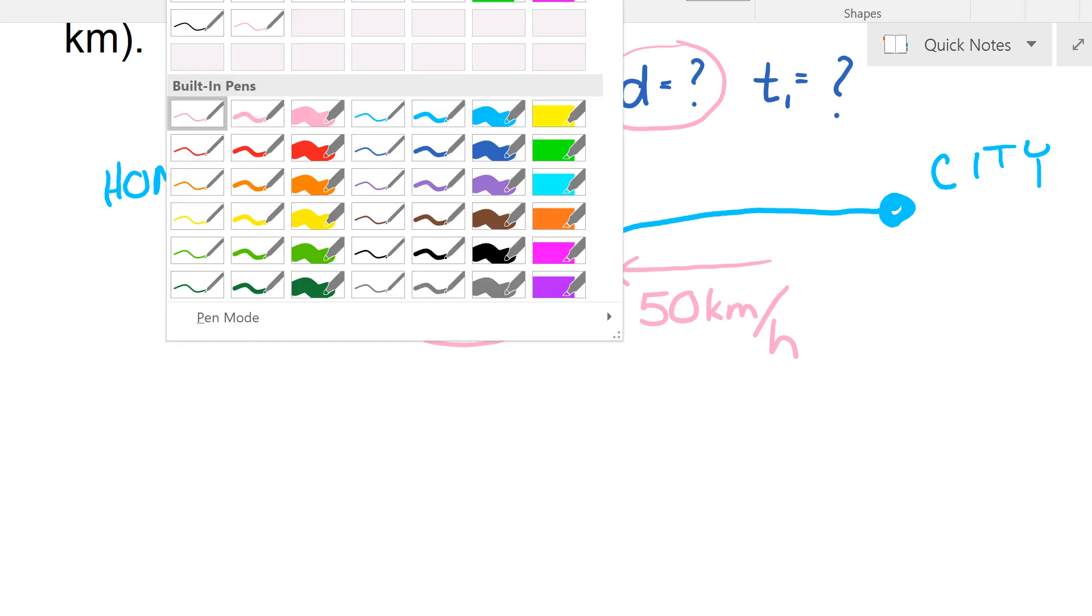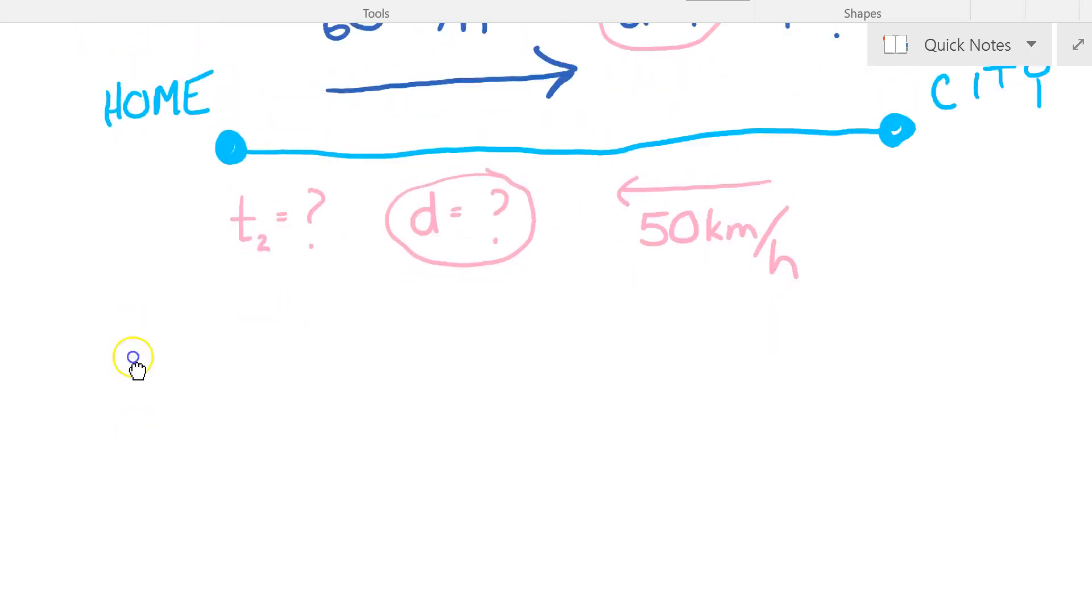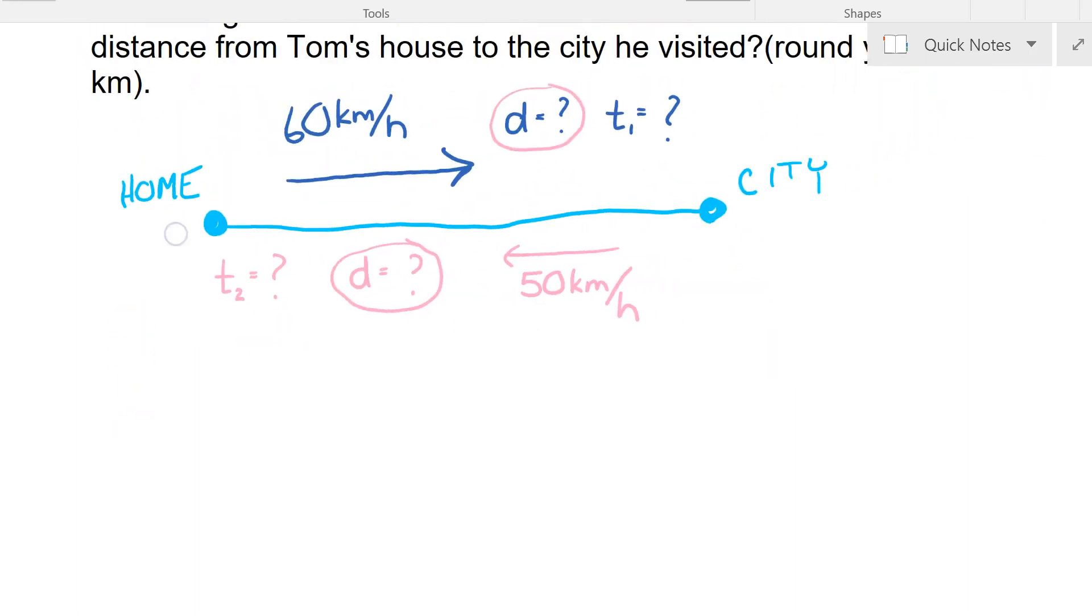But what they do tell us in this problem is that the total time that he traveled was five hours. So that means t sub 1 plus t sub 2 equals 5. And since these two distances are the same, I can write a time in terms of speed and distance and I can then just solve for d.